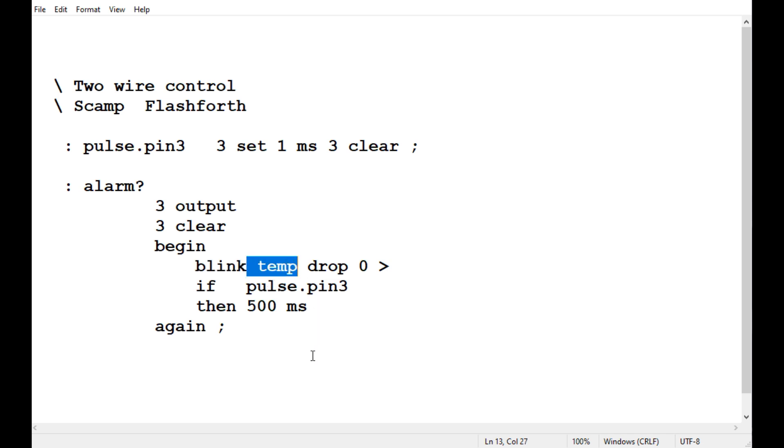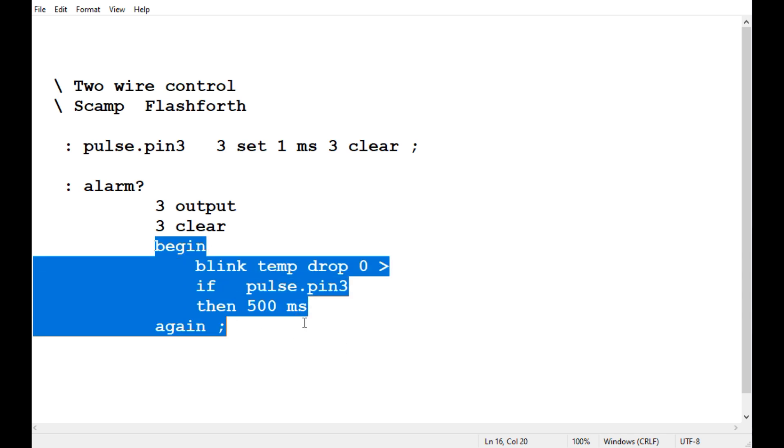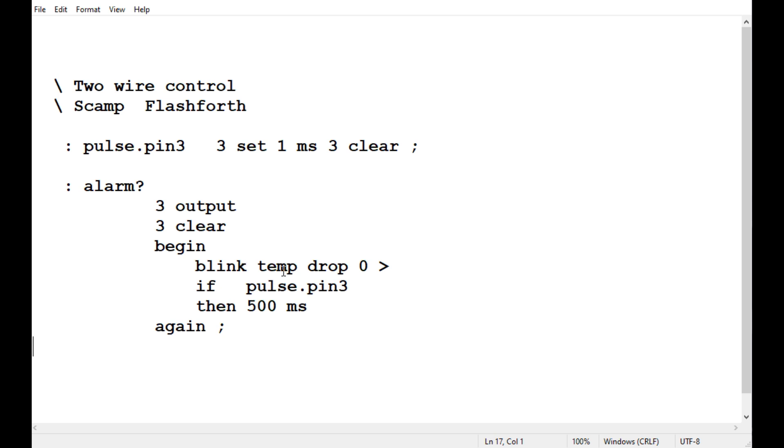So we take a temperature measurement and we're going to get back an integer and a fractional and I just want the integer so I drop the fractional off the stack. And then we compare it to zero. Now if it's greater than zero meaning it's not freezing, we're going to get a pulse on pin 3 every 500 milliseconds. But if the temperature is below zero then we won't get a pulse, the pulses will go away. And this is in a continuous loop always monitoring the temperature to give us pulses when it's above zero and no pulses when it's below zero.